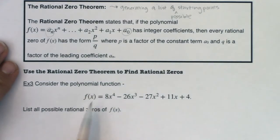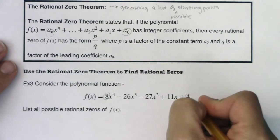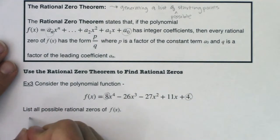All right, so it says consider this polynomial function 8x to the fourth minus 26x cubed minus 27x squared plus 11x plus 4. And it says list all possible rational zeros. So we're just going to generate a list of possible starting points. And you want to look at the coefficient of your first term, your leading term, and your constant. And so let's start with the lowest degree. We'll talk about this as p.